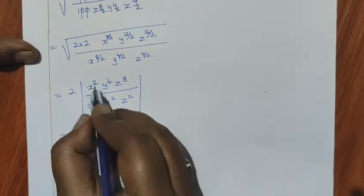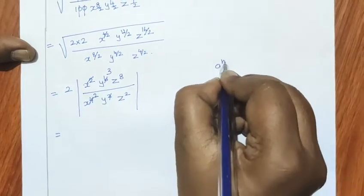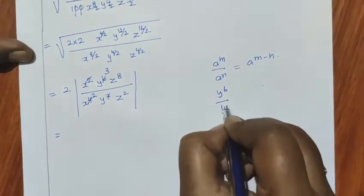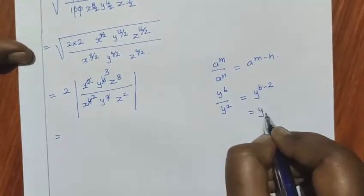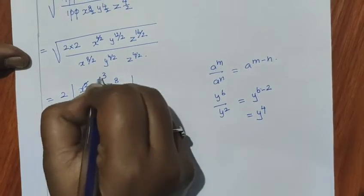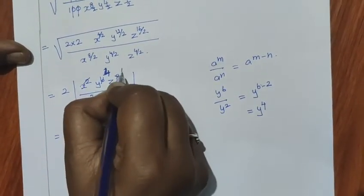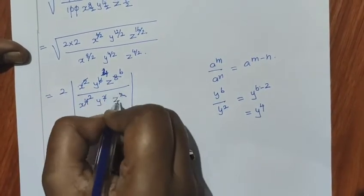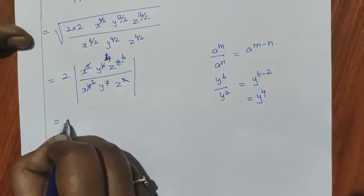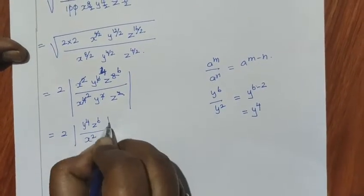Now x squared and x power 4 cancel to give x squared remaining. Next, using the formula a power m divided by a power n equals a power m minus n: y power 6 divided by y power 2 equals y power 6 minus 2, which is y power 4. Then z power 8 divided by z power 2: 8 minus 2 equals 6, so z power 6. The answer is y power 4 z power 6 divided by x power 2.